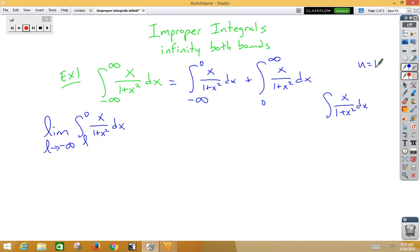If u is 1 plus x squared, du is 2x dx. If I want to multiply by 2 on the inside, I have to divide by 2 on the outside. I now have one-half integral 1 over u du, which is natural log of absolute value 1 plus x squared.